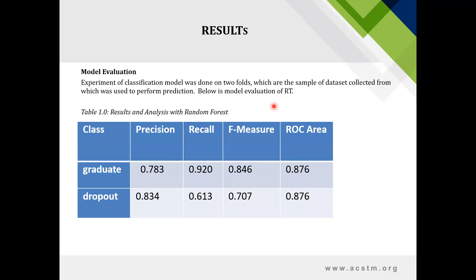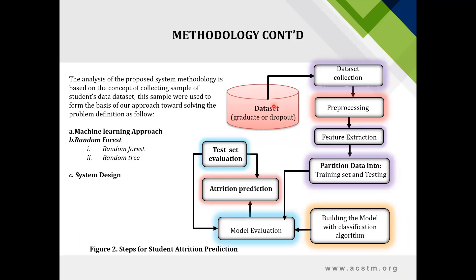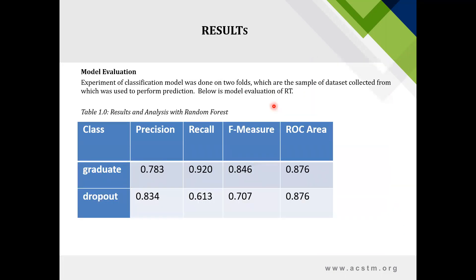Proceeding to the results, model evaluation was carried out on two folds of the sample data set collected. From the results and analysis with Random Forest, the class of graduate and dropout shows a precision of 0.783 for graduates and 0.834 for dropouts. Recall is 0.920 for graduates and 0.613 for dropouts. F-measure is 0.846 for graduates and 0.706 for dropouts, along with the ROC values as seen in the table.